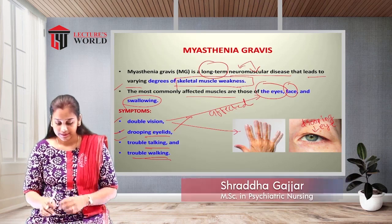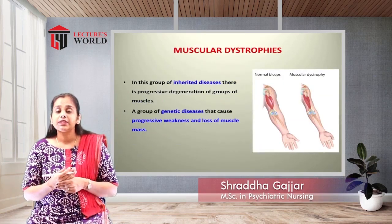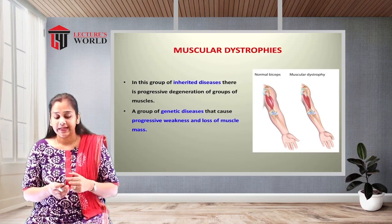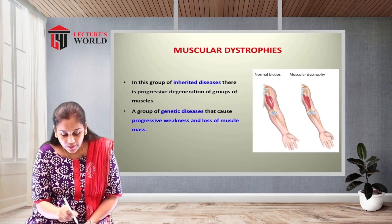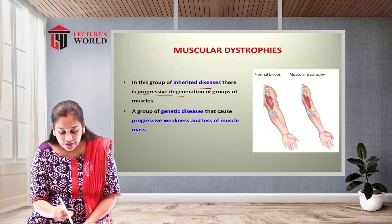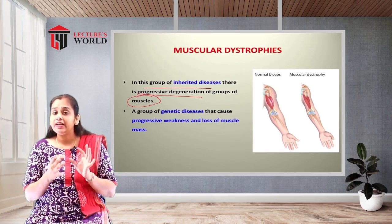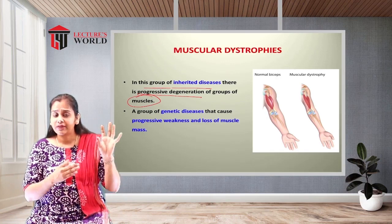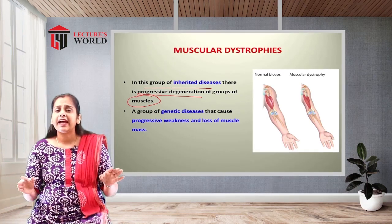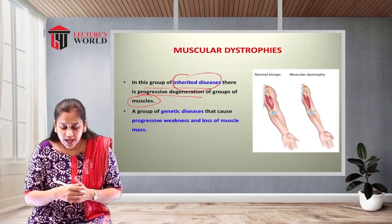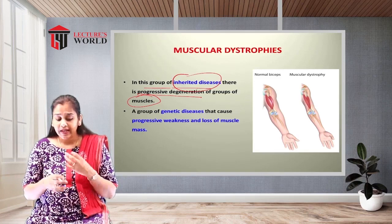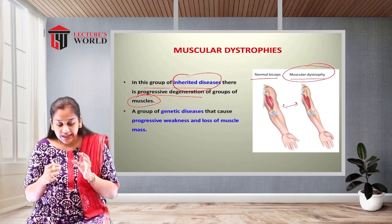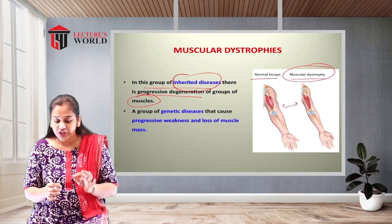The second disease condition is muscular dystrophy. This is a group of inherited diseases involving progressive degeneration of a group of muscles. It is a hereditary disease mostly seen in inherited cases, passed from grandparents to their offspring. As shown, the normal muscle contrasts clearly with the dystrophic muscle.